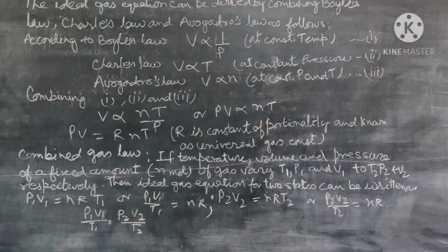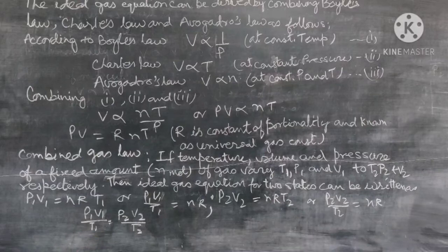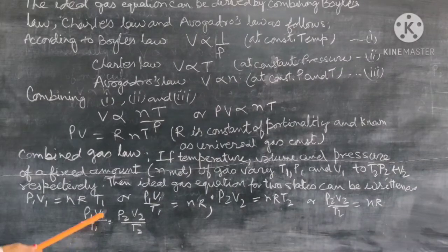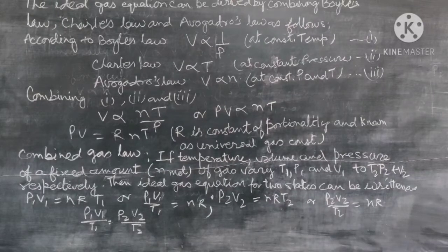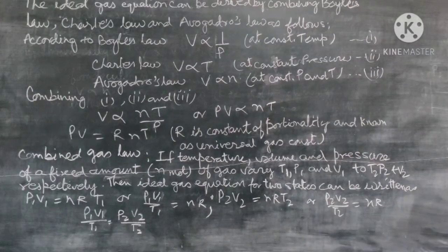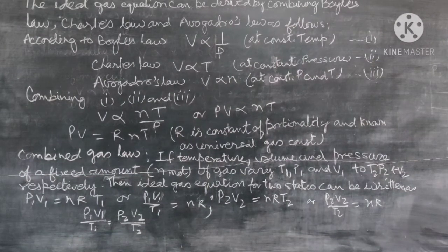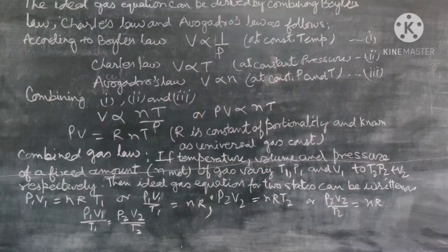We can use this combined formula to find the volume of the gas at a particular temperature and pressure if P1, V1, T1 and P2, T2 are given. These three variables are required to describe the state of a gas. This is the combined formula, which we can use to solve numerical problems based on the combined gas equation.